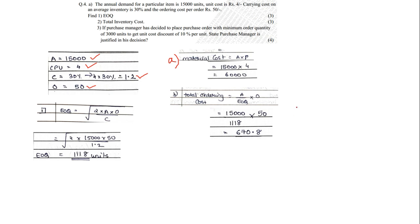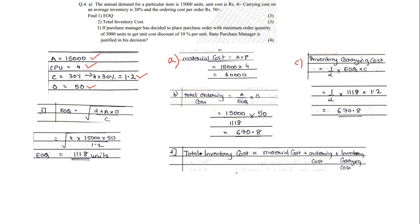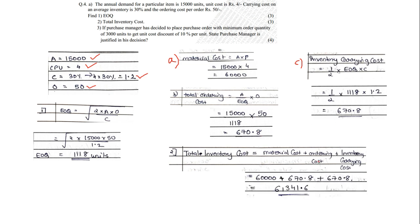Inventory carrying cost = half into EOQ into C = half into 1118 into 1.2 = 670.8 rupees. Applying the final formula: total inventory cost = 60,000 + 670.8 + 670.8 = rupees 61,341.6.